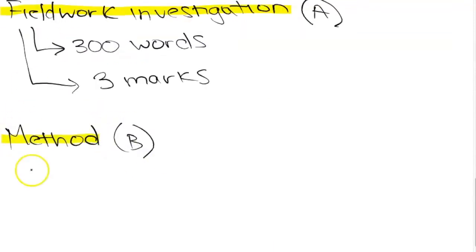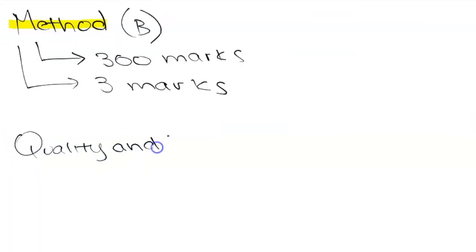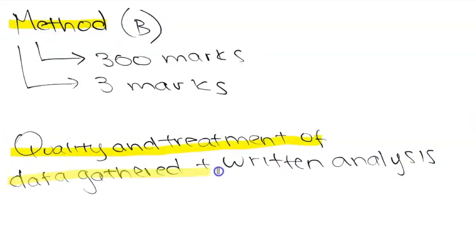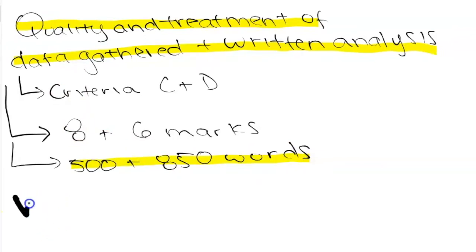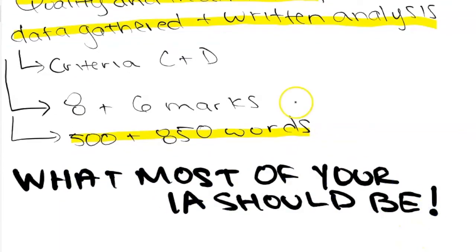For the methods of investigation, you get 3 more marks. So that's 300 words. But of course, you can always write this in a bit less if you know for sure that you're meeting those 3 marks. And then for the quality and treatment of information collected and written analysis, that's 6 marks, and then for the written analysis, that's 8 marks. So that's a whopping 14 marks, almost half of the IA. If you were to do nothing else and just analyze the data that you collected and treat it properly, as in with visual graphs and charts and such, you would still get 14 out of 25 marks.